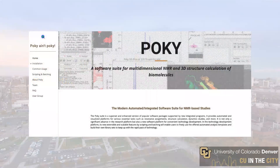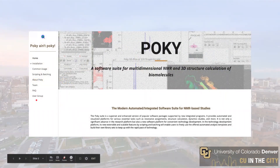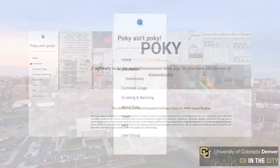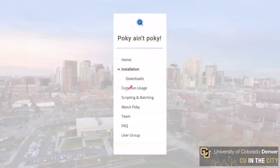When you are at the Poki homepage, there should be a menu on the right. Click on the little arrow right next to Installation, and you should see a sub-tab labeled Downloads.